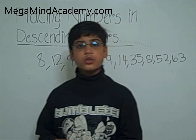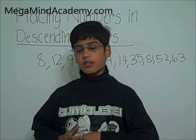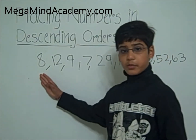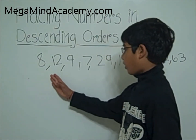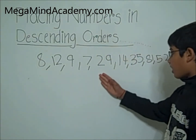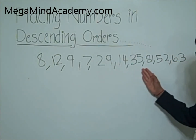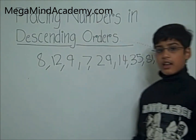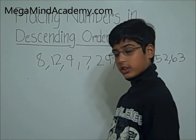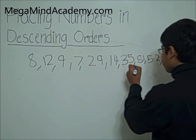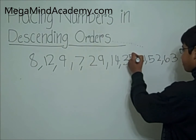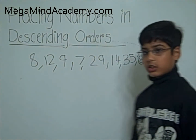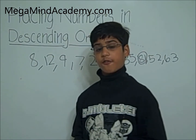Now which one is the largest? Our numbers are 8, 12, 9, 7, 29, 14, 35, 81, 52, and 63. 81 is the largest number, so we're going to place 81 first.